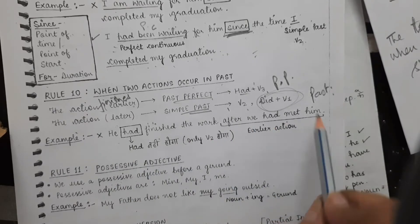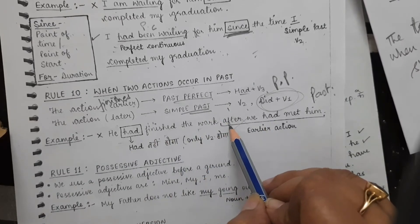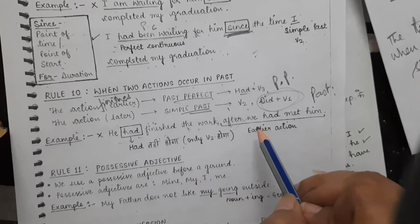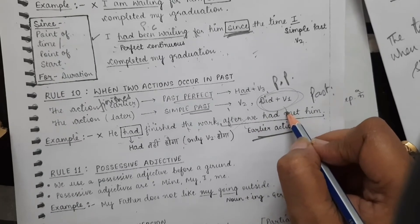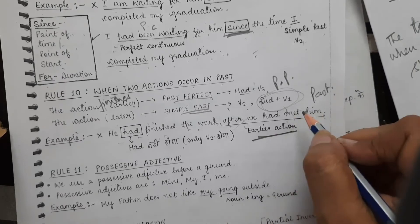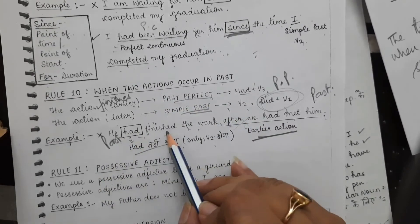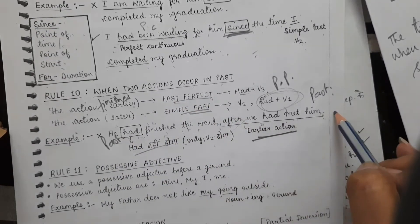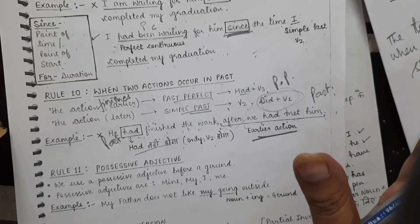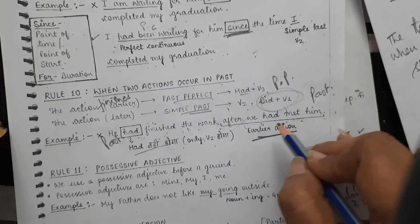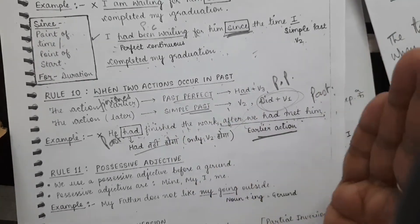'He had finished the work after he had met him' — this is wrong. The correct sentence is: 'He finished the work after he had met him.' Meeting happened first — past perfect 'had met'; finishing work happened later — simple past 'finished'. The action that finishes earlier gets 'had' plus third form; the action finishing later gets only simple past. Many exam mistakes happen because of this rule.